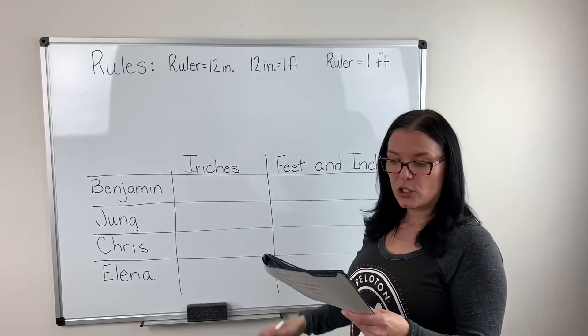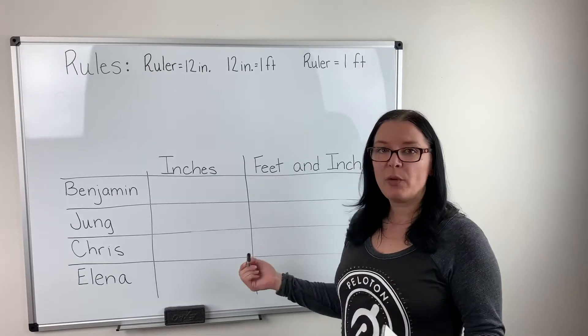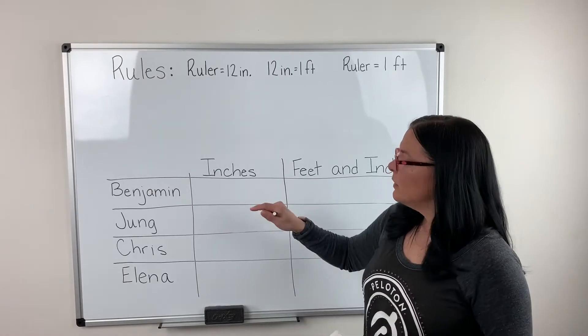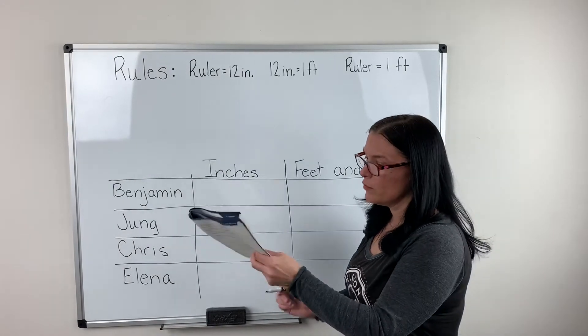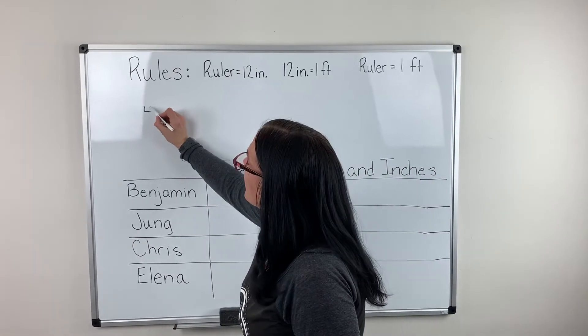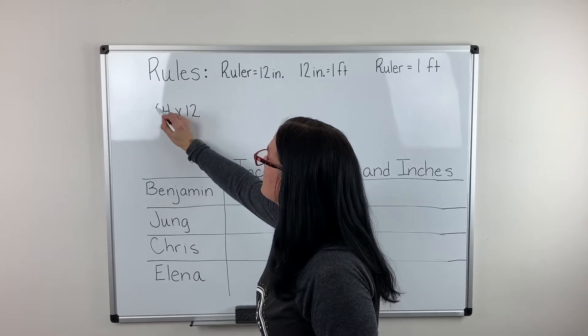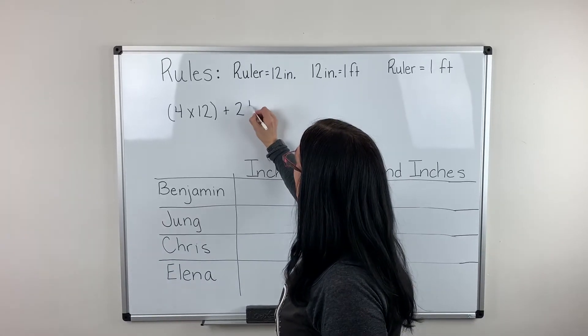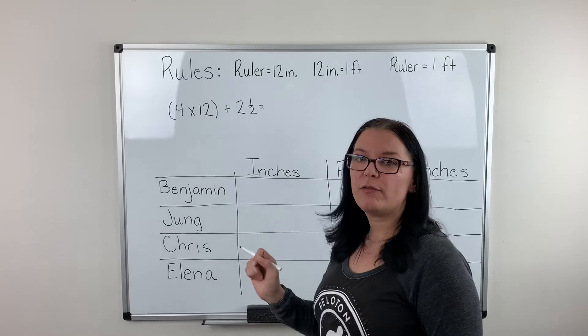Benjamin jumped four rulers and two and a half more inches. I'm going to need an equation to help me solve this problem. I know that Benjamin jumped four rulers and each of those rulers were 12 inches, and then I'm going to add on his two and one half more inches.